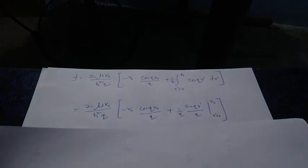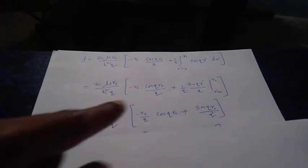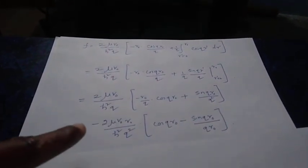The scattering amplitude becomes 2μV-naught/ℏ²Q times: substituting the upper limit r-naught gives minus r-naught cos(Qr-naught)/Q, and the lower limit gives zero. Taking the minus sign out in front, plus 1/Q times the integral of cos(Qr') gives sin(Qr')/Q. With appropriate limits, the upper limit gives sin(Qr-naught)/Q² and sin(0) equals zero.